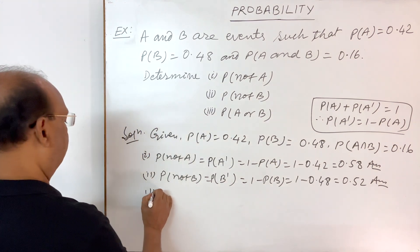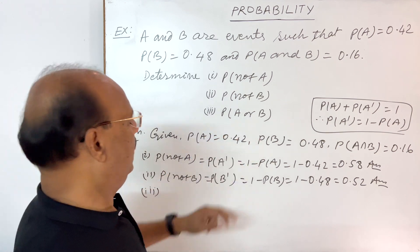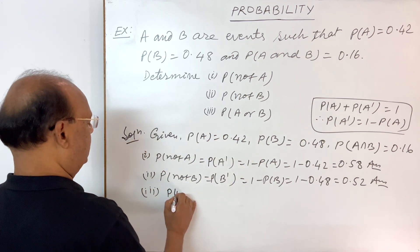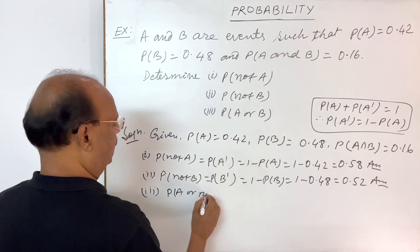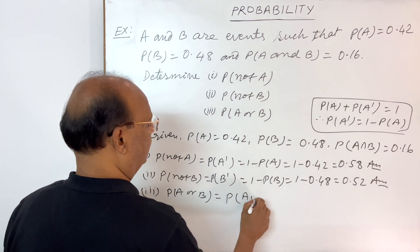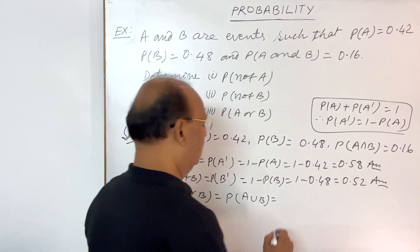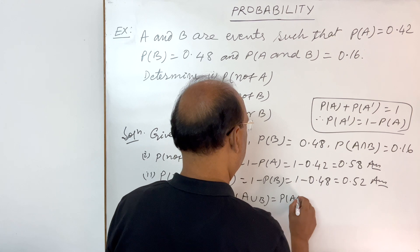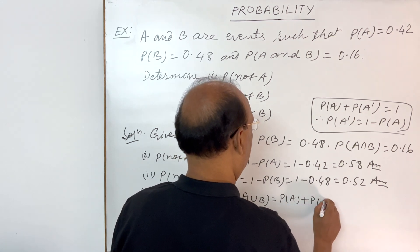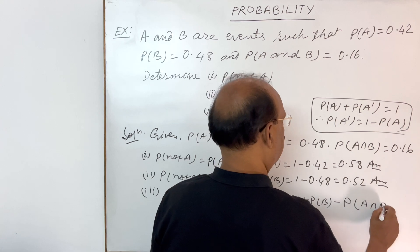And third part. Here we have to find out probability of A or B. A or B means we have to find out probability of A union B. And there is a formula for probability of A union B. This is equal to probability of A plus probability of B minus probability of A intersection B.